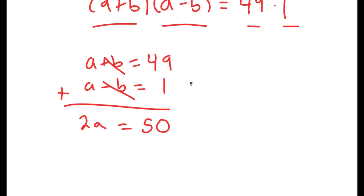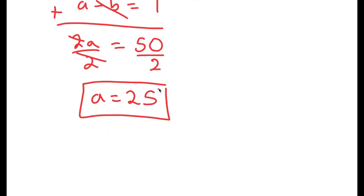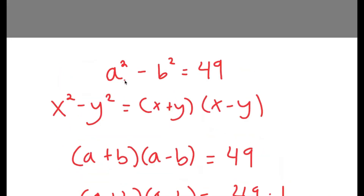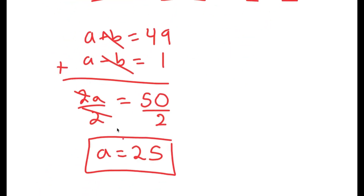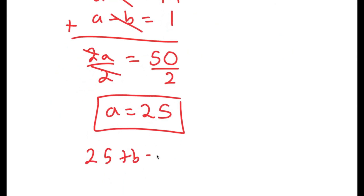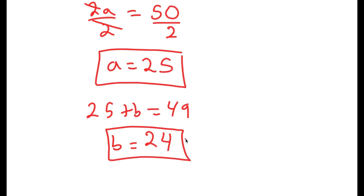I get that 2a is equal to 50. If I divide both sides by two, these cancel out and I get a is equal to 25. Now that we know a is equal to 25, remember we said that a plus b is equal to 49, so this means 25 plus b is equal to 49, and b is equal to 49 minus 25, which is 24. So a equals 25 and b equals 24.